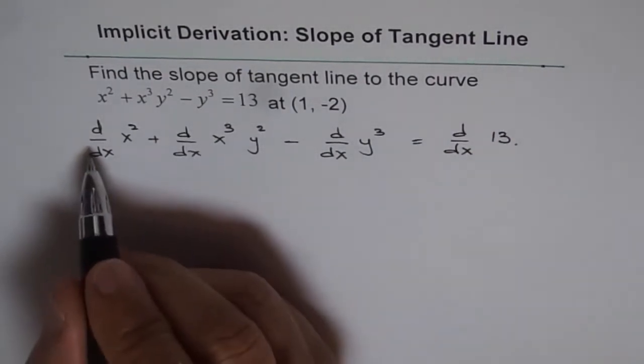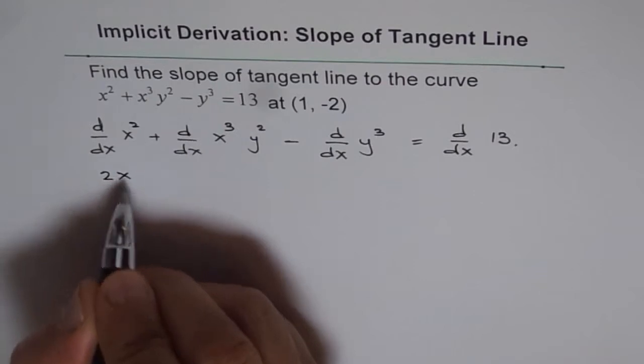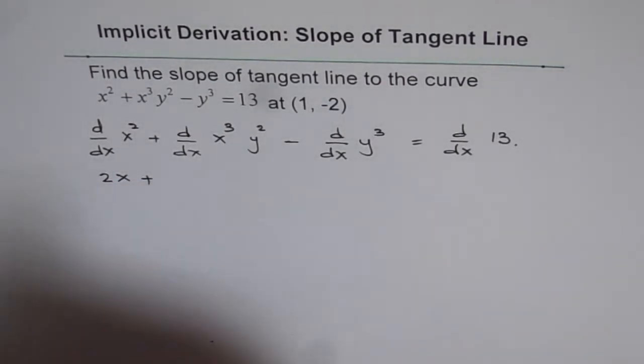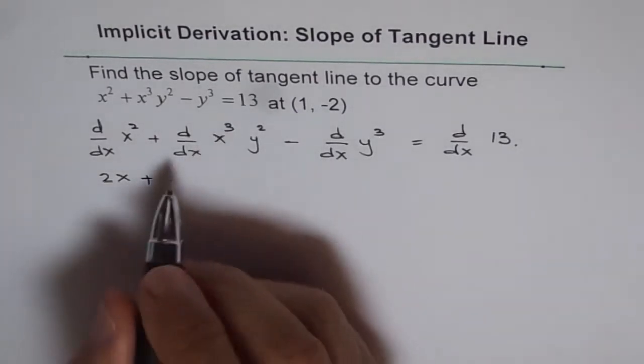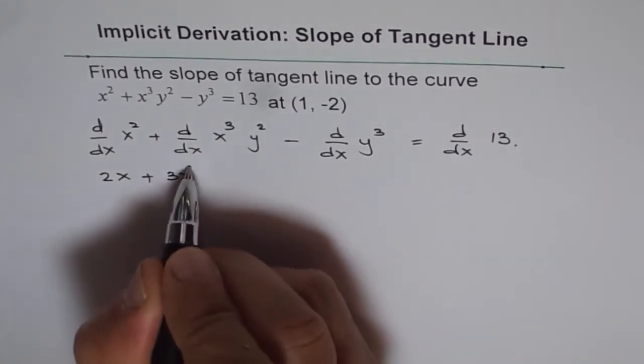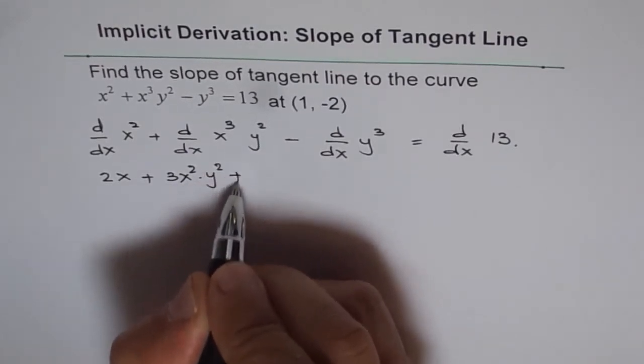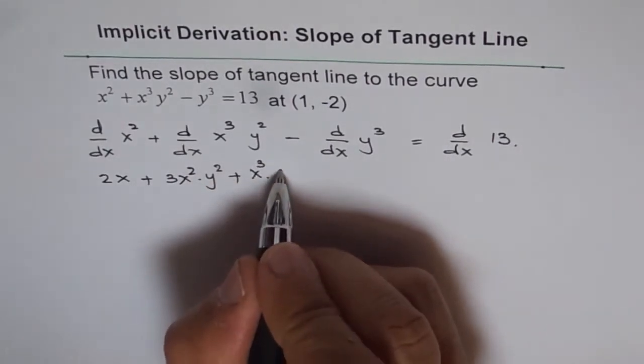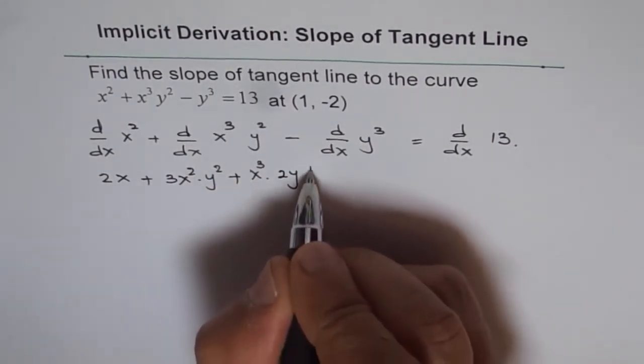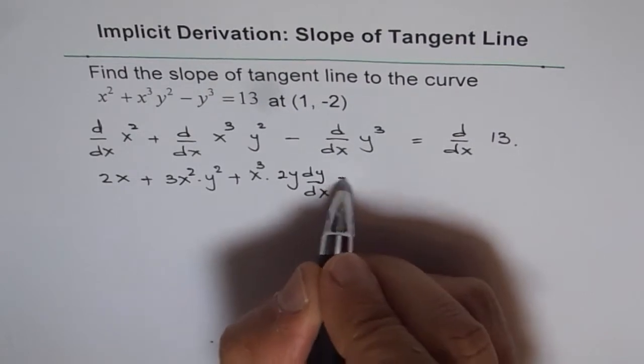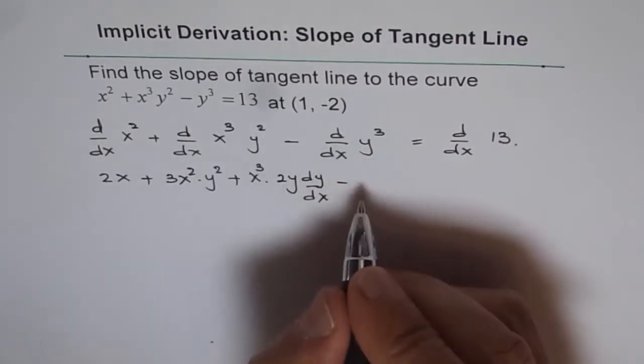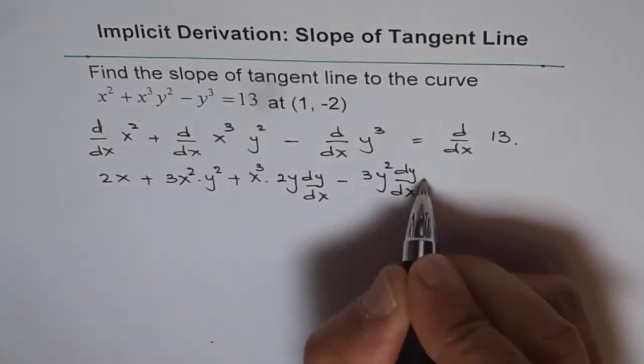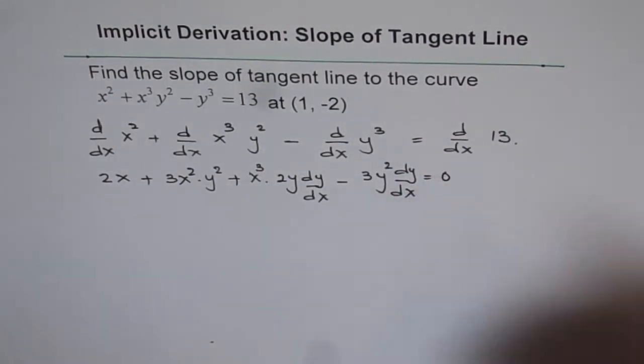Now the derivative of x² is 2x. We can write 2x plus here we have a product, so we will apply the product rule. So derivative of x³ which is 3x² times y² plus x³ times derivative of y² which is 2y dy/dx minus derivative of y³ which is 3y² dy/dx equals 0, the derivative of a constant.